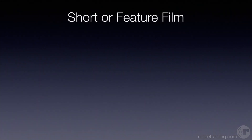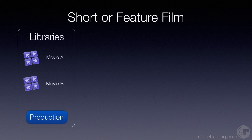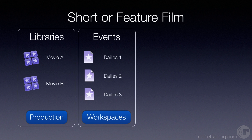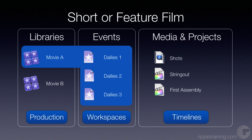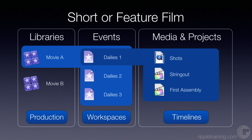Let's look at a couple of specific examples. Let's say you're shooting a short or a feature film. You might have one library for your movie, or a library for every movie you're doing. If you're doing a short, a library could hold the entire movie. In terms of workspaces, the movie — your self-contained production unit — would store all of your dailies. Each event would be that day's shooting, which is one option for how to organize. Those separate events would contain individual shots for those dailies, maybe a string out, rough cut, or first assembly — all related to those specific events.